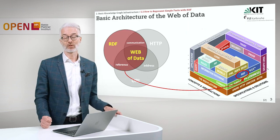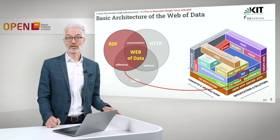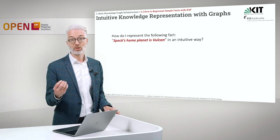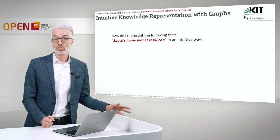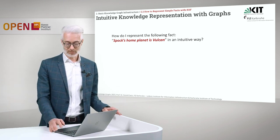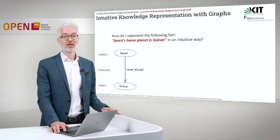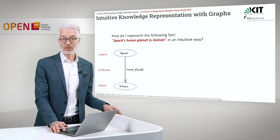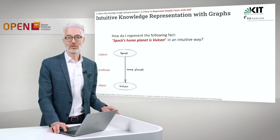The Resource Description Framework resides at the information exchange layer of the Semantic Web Technology Stack. The basic thing we are doing there is we want to represent information based on a graph. We know already how to answer the question of how to represent a simple fact like: Spock's home planet is Vulcan. We can do that intuitively with a graph — a subject, a predicate, and an object — two nodes, Spock and Vulcan, connected by a property or predicate called home planet.